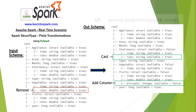Here you can see I have given an input schema and the output schema with some struct fields inside it. This is basically a JSON file, so when reading it we will obviously have a struct type or nested struct type fields. The final goal is to understand how we can add a column, remove a column from the struct type, and how to cast a column. Let's move on to today's demo.